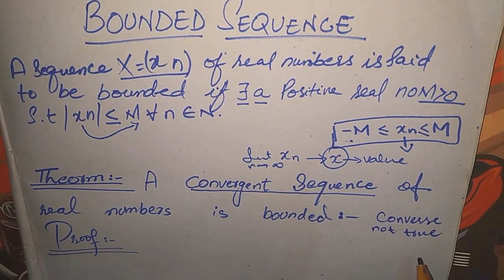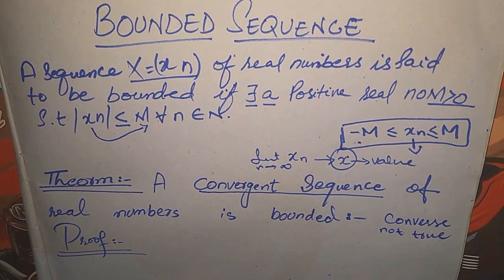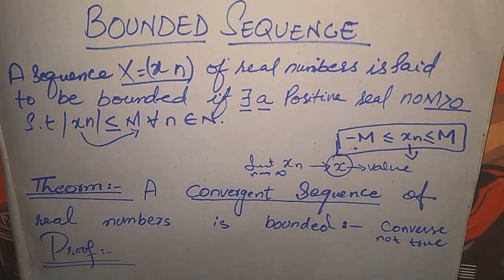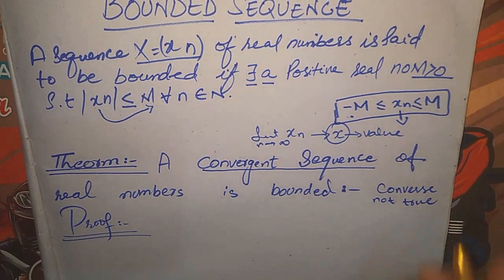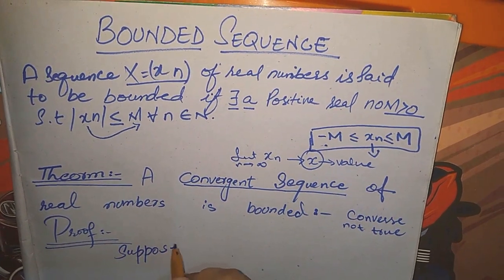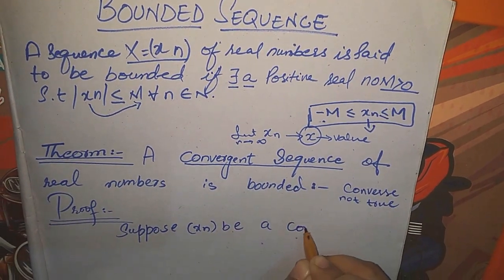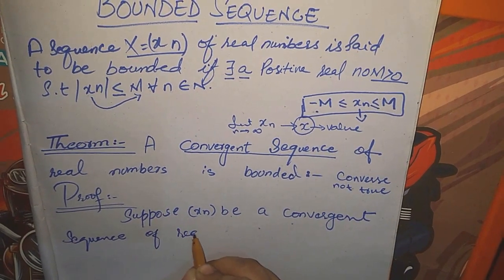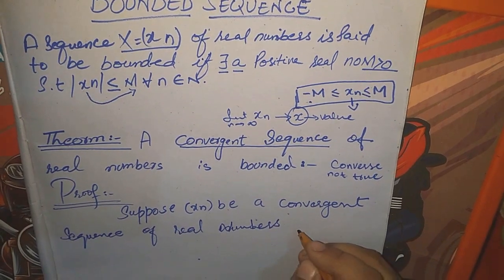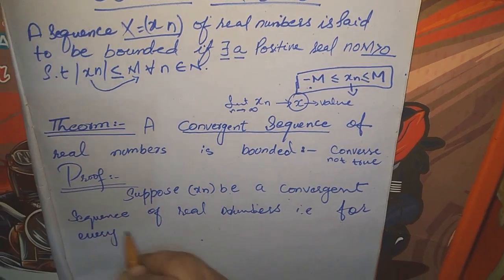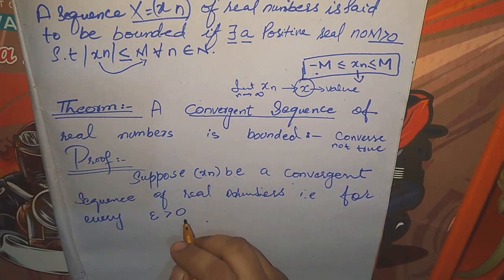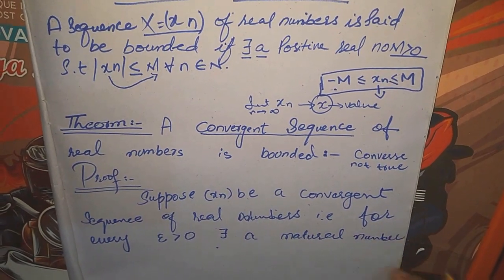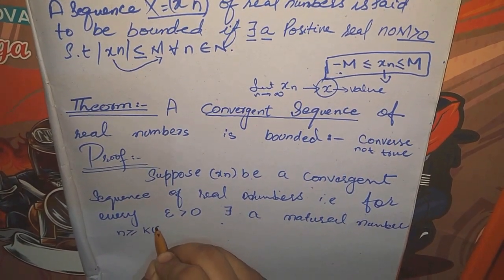If we have a convergent sequence of real numbers, then it is bounded. But the converse is not true — it means that if we have a bounded sequence, it is not necessarily a convergent sequence. Just this statement: a convergent sequence of real numbers is always bounded. Now, let's go to the proof. We have a convergent sequence X. That is, for every epsilon greater than 0, there exists a natural number n greater than or equal to k(epsilon) such that |xn - x| < epsilon.